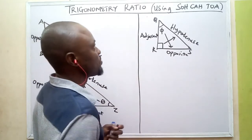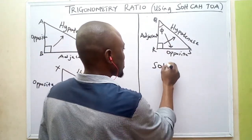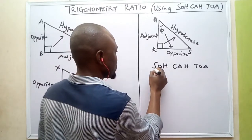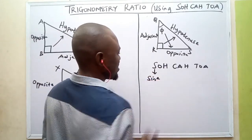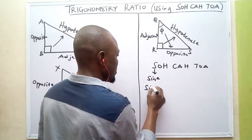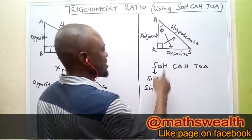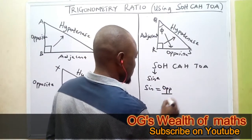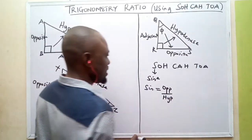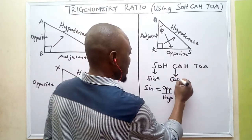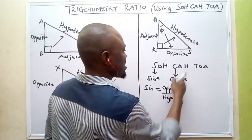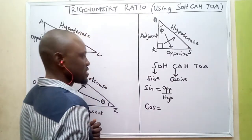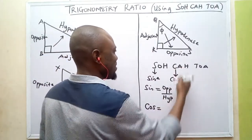Now, how do we make use of SOHCAHTOA? SOHCAHTOA is an acronym. SO: sine of an angle is the opposite side divided by the hypotenuse side. CA: cosine means the adjacent side divided by the hypotenuse side — written as cos, so cos equals adjacent divided by hypotenuse.